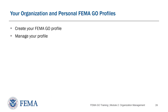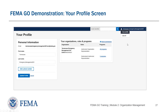The next step is to update your organization and personal FEMA Go profiles. This is important because it will list your contact information, and your phone number is required at the time you submit your sub-application or grant application. If you don't have a phone number attached to your profile when submitting, you'll have to go through extra steps to continue. So take a minute to add your phone number to your profile well before you get to the point of submitting.